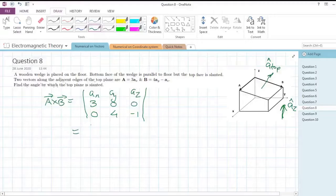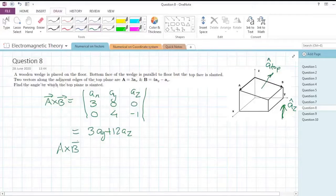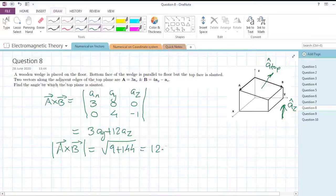Finding out this cross multiplication, you will get 3ay + 12az. I have written it directly because I know you will be able to do this by yourself. This is A×B. Let us also find the magnitude of this result, which will be the root of 3 squared (that is 9) and 12 squared (that is 144), and you will get 12.37.